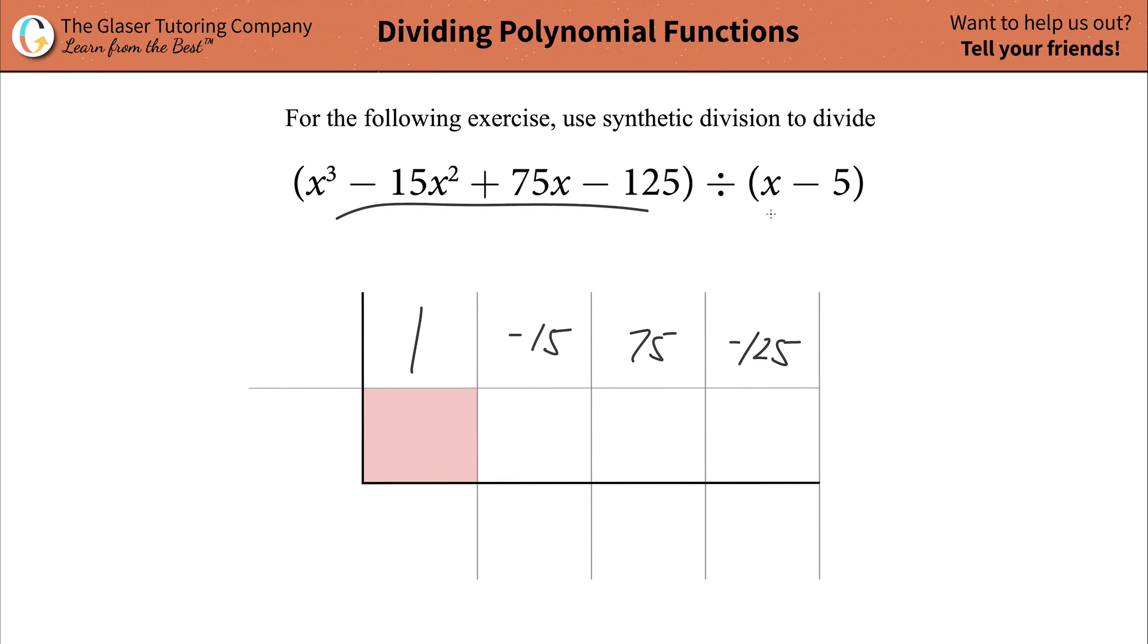Perfect. So you took care of your dividend. Now you're going to look at your divisor. You're going to take this divisor and set it equal to zero. So x minus five equaling zero, and then you're going to add five to it. x is going to be equal to five. And what this tells us now is that value of five is the value that we're going to plug in here. And that means now we have a fully filled first row of our table.